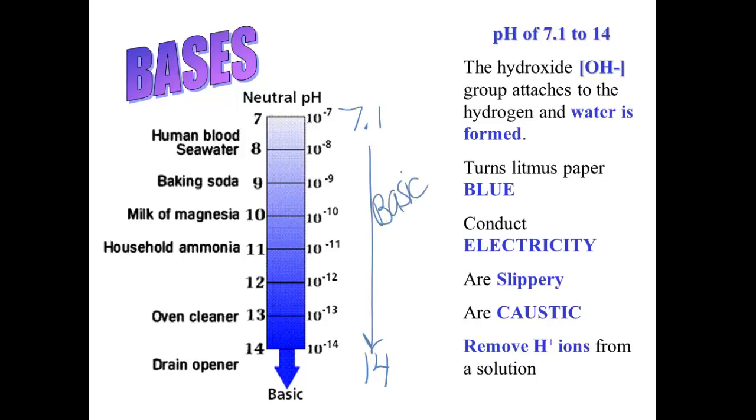Things in the body that are slightly basic, human blood has a pH between 7 and 8. The juices in the intestines have a pH of about 8.5. And we'll talk more about the different pHs in the body when we talk about the digestive system.